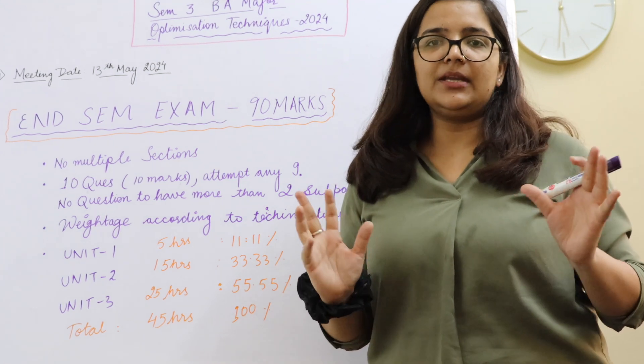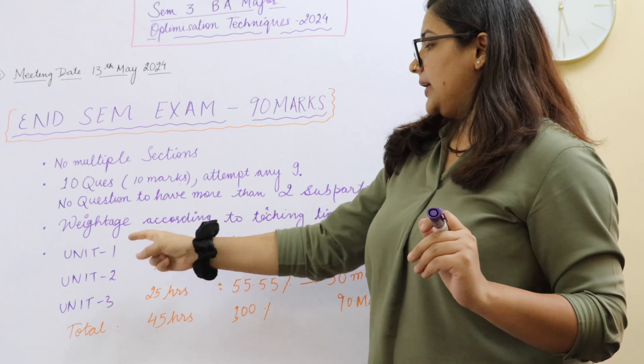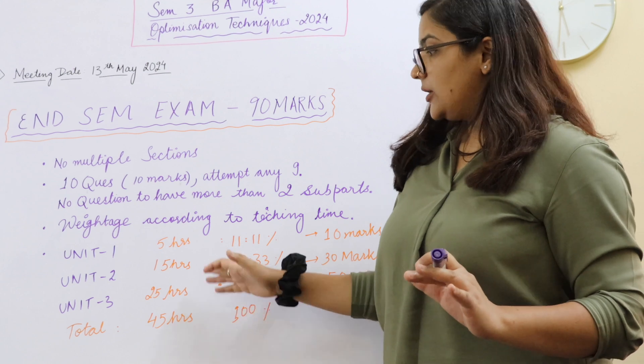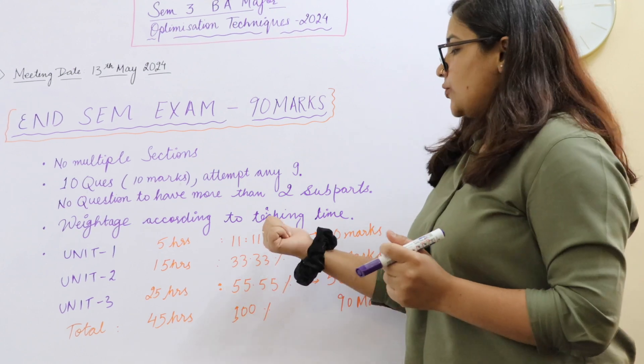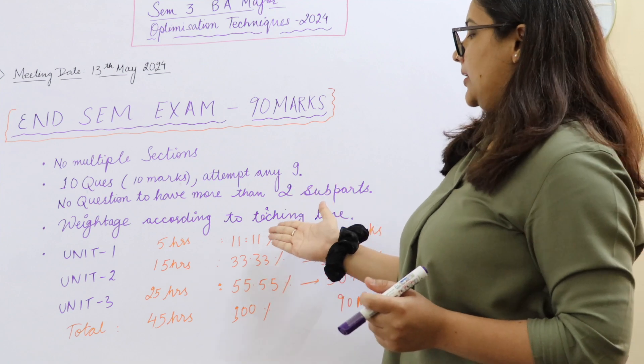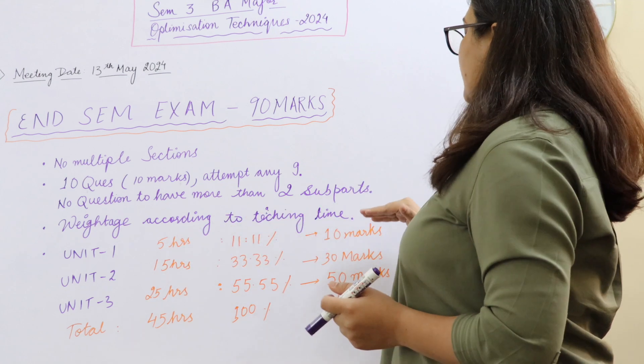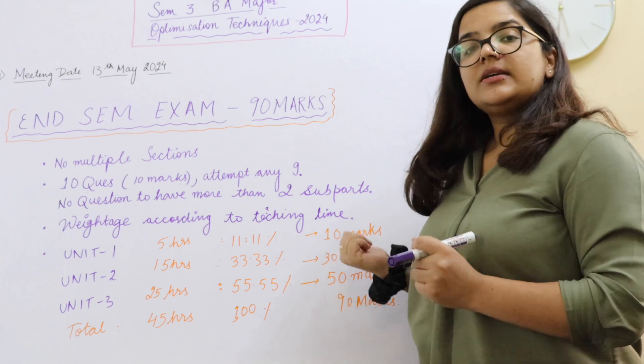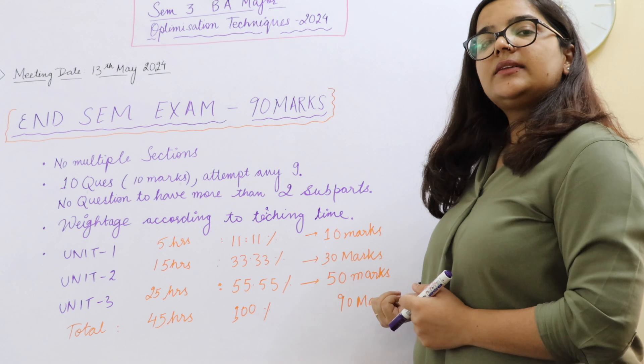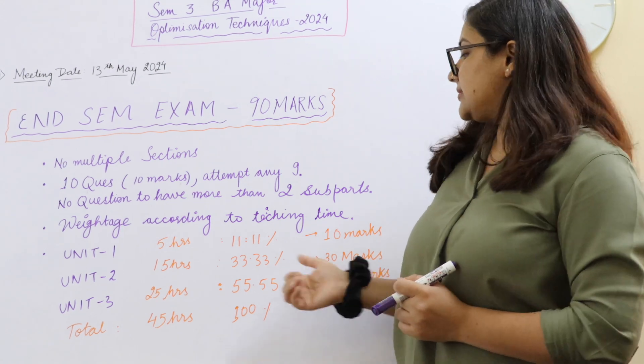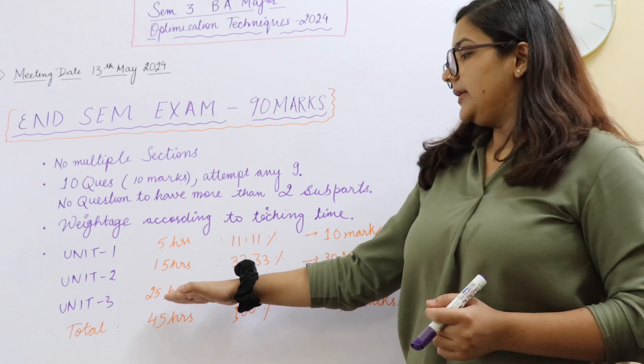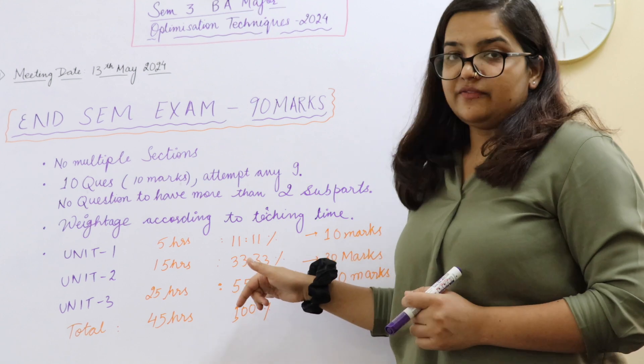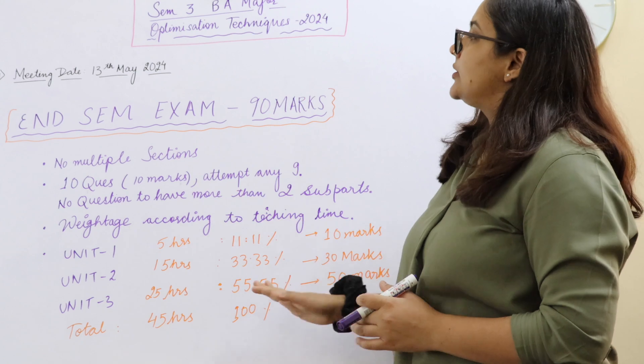And apart from that, the weightage that you're going to have is going to be according to the teaching time for each of the unit which has been specified. So unit number one has 5 hours, unit number two has 15 hours, and unit number three has 25 hours. So in total 45 hours of teaching time. So if you convert it into percentage terms, you're going to be getting these numbers. And if you try to replicate that percentage in terms of numbers out of 90, first unit will carry 10 marks, second unit will carry 30 marks, and the third and final unit is going to carry 50 marks. So all the main optimization things are going to happen in unit number three, so that is why it's carrying 55.55 percent weightage which is 50 marks.